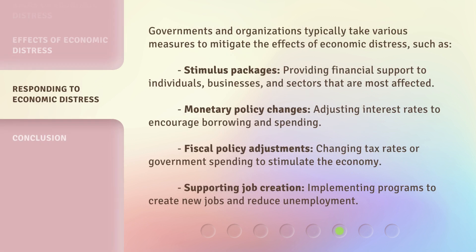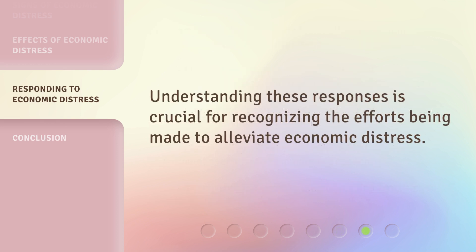Governments and organizations typically take various measures to mitigate the effects of economic distress, such as stimulus packages — providing financial support to individuals, businesses, and sectors that are most affected. Monetary policy changes — adjusting interest rates to encourage borrowing and spending. Fiscal policy adjustments — changing tax rates or government spending to stimulate the economy. Supporting job creation — implementing programs to create new jobs and reduce unemployment. Understanding these responses is crucial for recognizing the efforts being made to alleviate economic distress.